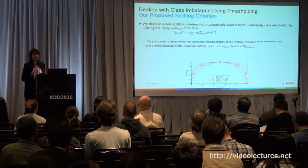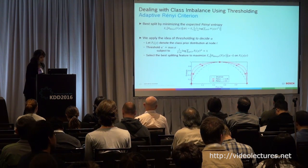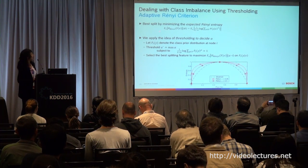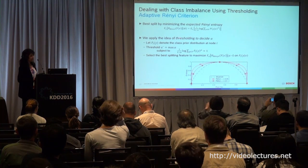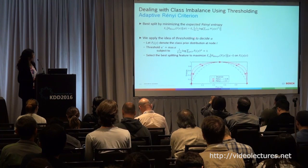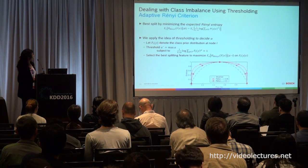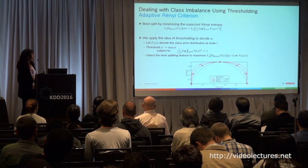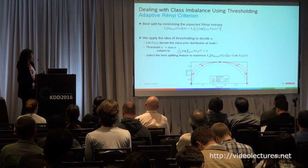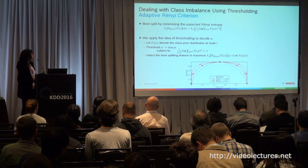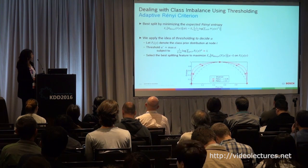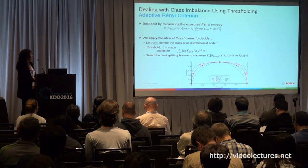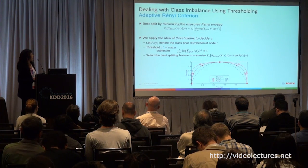When alpha tends to 1, Renyi entropy reduces to Shannon entropy, and in the ideal scenario when classes are balanced, it works perfectly. Going to adaptive Renyi entropy — we determine the best split by minimizing the expected Renyi entropy and apply the idea of thresholding. Let P_L(Y) denote the class distribution of a node L. We find an alpha star — the maximum alpha where the Renyi entropy equals 1 — and then select the best splitting criterion that maximizes this Renyi entropy.